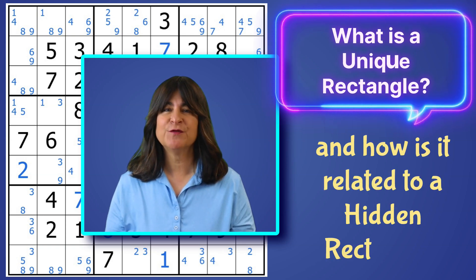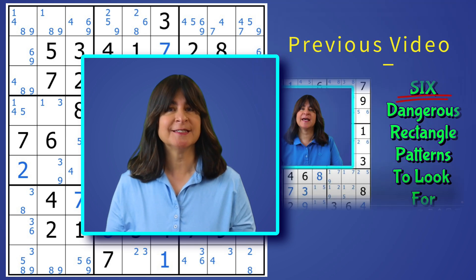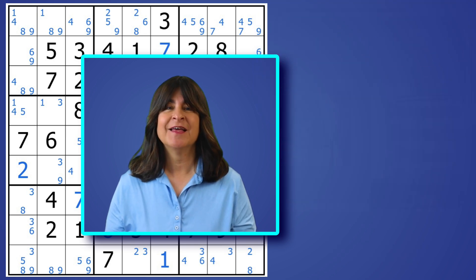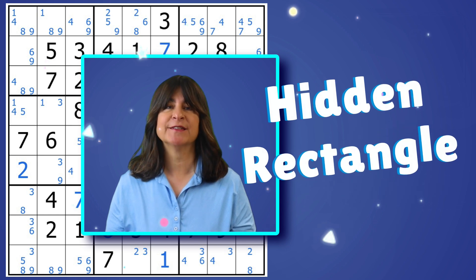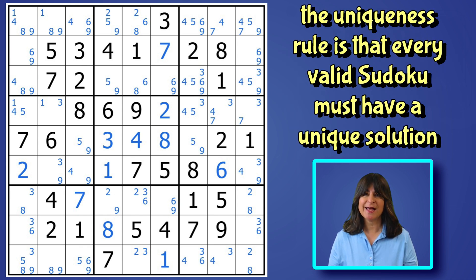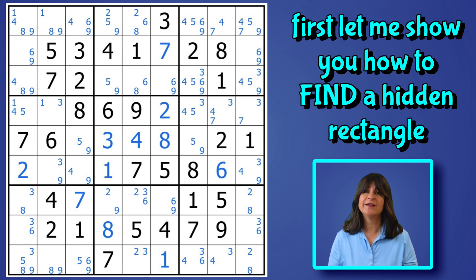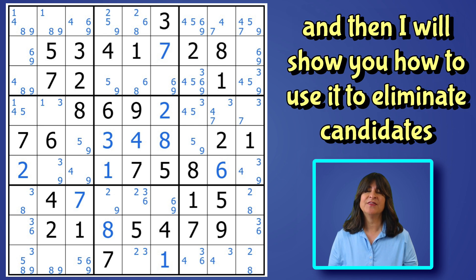Hello everyone. In a previous video, I explained what uniqueness is in Sudoku, and I reviewed six different types of unique rectangles. This video is about the seventh type of unique rectangle: the hidden rectangle. It's called a hidden rectangle because the pattern is not so obvious, but the logic is still the same. I'll show you how to find the hidden rectangle and then explain how we can use this to eliminate candidates.